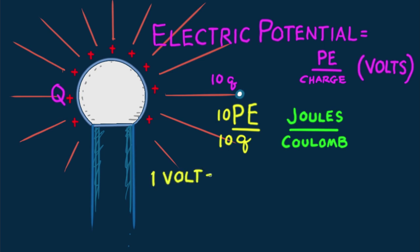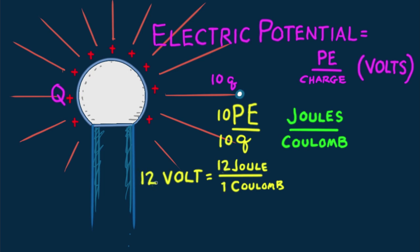One volt equals one joule per one coulomb. What's the value of voltage for a coulomb of charge with a potential energy of 12 joules? 12 volts — because 12 joules per coulomb equals 12 volts. And 50 joules per coulomb equals 50 volts, and so on.